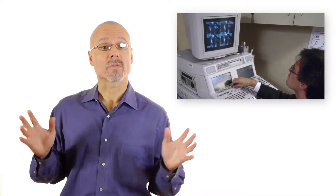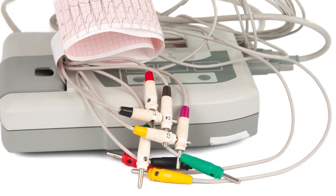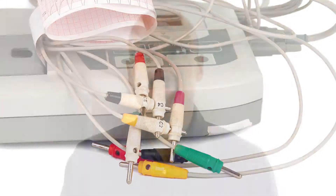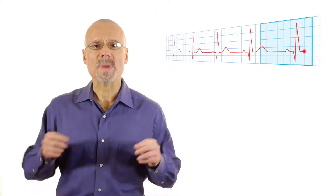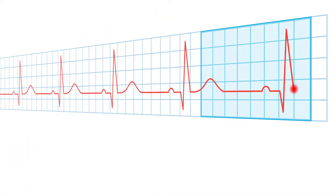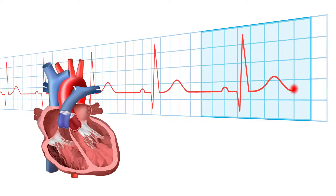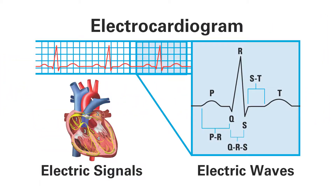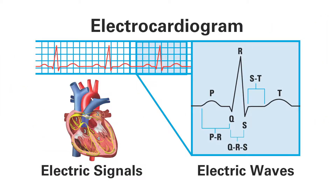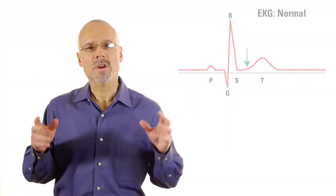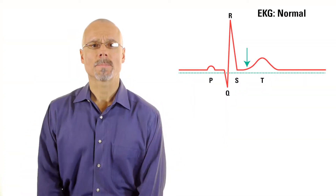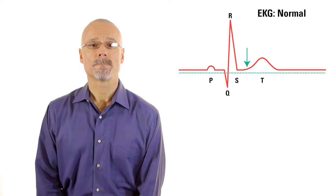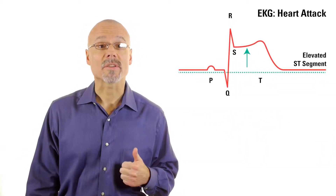Doctors have different ways to determine if a person actually is having a heart attack. One of these is the EKG. Remember the electrodes placed on each patient's chest by the emergency medical technicians? These wire connections record peaks and valleys of electrical activity in the heart, created by contracting muscles in each section of the heart. This information can then be printed on an electrocardiogram, or EKG, a sort of visual roadmap that represents what is happening in the heart. Here's a normal EKG. And here's an EKG from a patient having a heart attack.